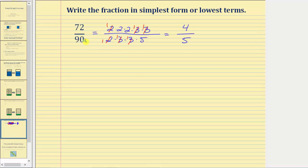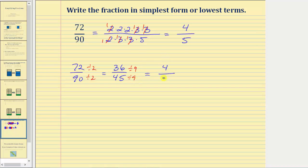Using the divisibility method, starting with seventy-two ninetieths: we recognize a common factor of two, so we divide numerator and denominator by two. Seventy-two divided by two is thirty-six, and ninety divided by two is forty-five. From thirty-six over forty-five, we recognize a common factor of nine, so we divide by nine. Thirty-six divided by nine is four, and forty-five divided by nine is five. Both methods yield the same result of four-fifths. With the prime factorization method we can see the common factors; with the divisibility method we must be able to identify them easily.